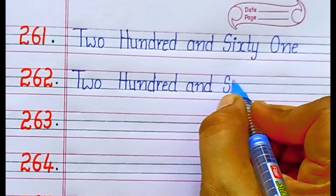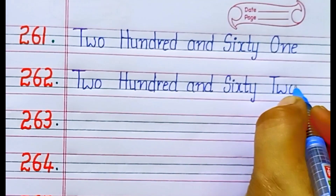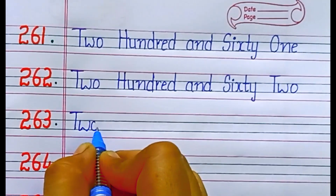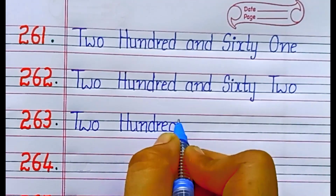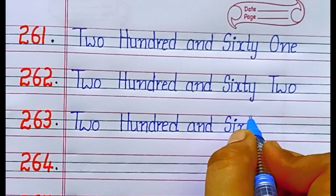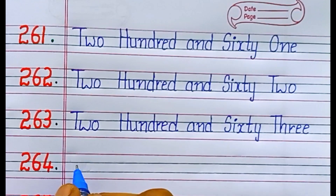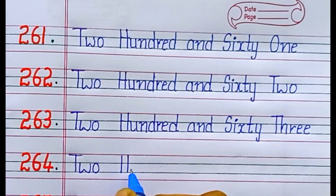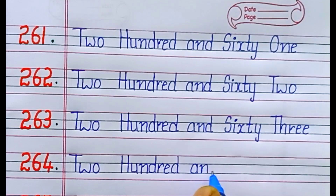Two hundred and sixty three. S-I-X-T-Y T-H-R-E-E. 63. Two hundred and sixty four. S-I-X-T-Y F-O-U-R. 64.